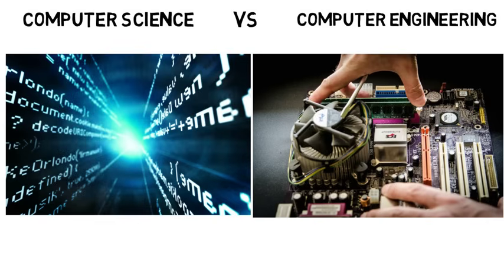To first just put simply, Computer Engineers focus more on hardware, like computer chips, microprocessors, sensors, etc., while Computer Science majors focus more on software.